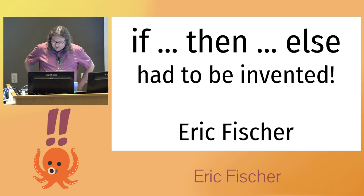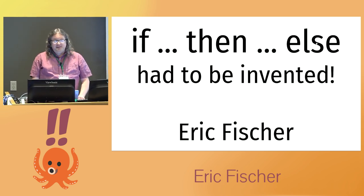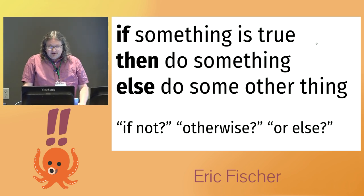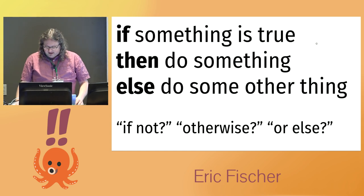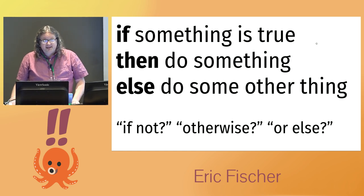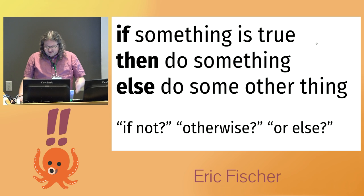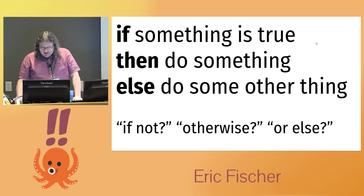Hi. I'm Eric, and I'm here to talk about what seems like kind of an absurd idea — that if-then-else had to be invented. If-then-else is how we talk about conditions in programming languages: if something is true, then do a thing, else do a different thing. That's just English, right? Except that it isn't. I can't use else as a conjunction in normal speech, only in programming languages. So where did this else come from?